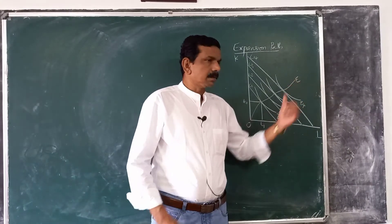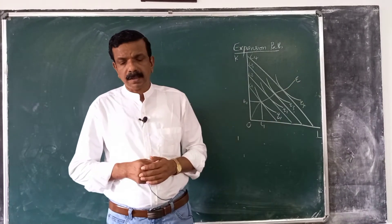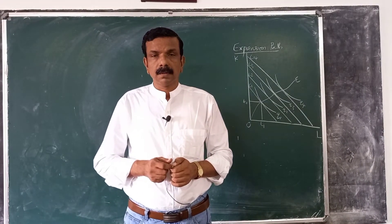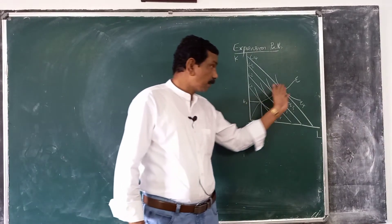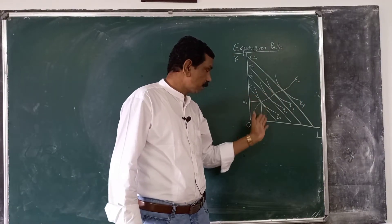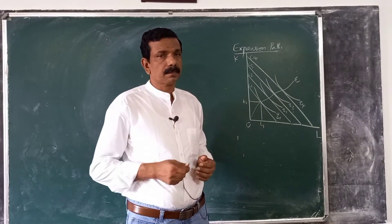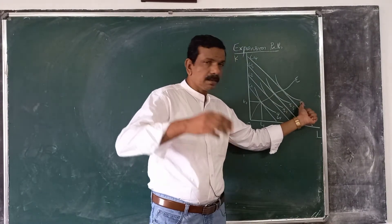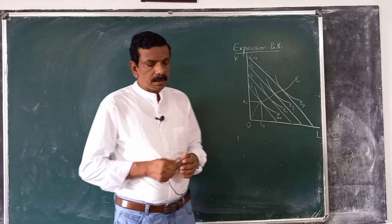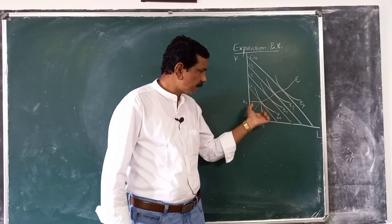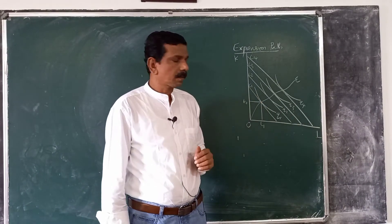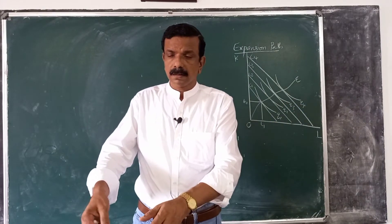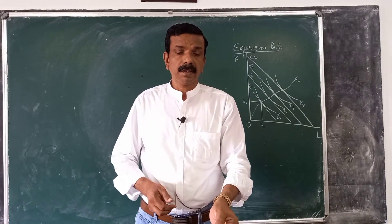As shown in the figure, the expansion path need not be a straight line. It will be a straight line if and only if the proportion in which capital and labor are used for successively higher levels of output remains constant. But if the use of inputs varies for different levels of output, then the expansion path will not be a straight line.